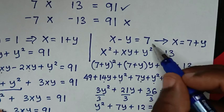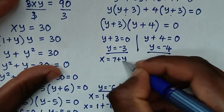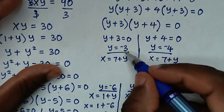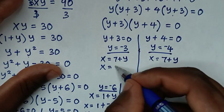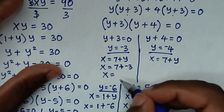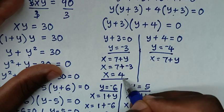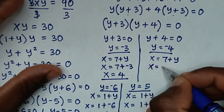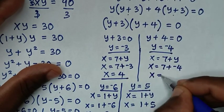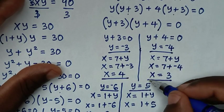From x equals 7 plus y: when y equals negative 3, x equals 7 plus (negative 3) equals 4. And when y equals negative 4, x equals 7 plus (negative 4) equals 3. So when y equals negative 3, x equals 4, and when y equals negative 4, x equals 3.